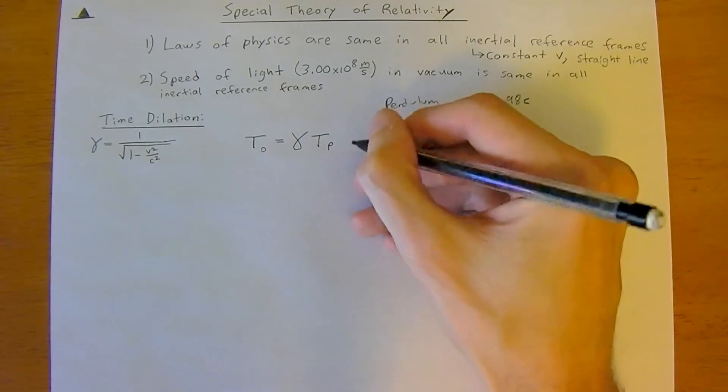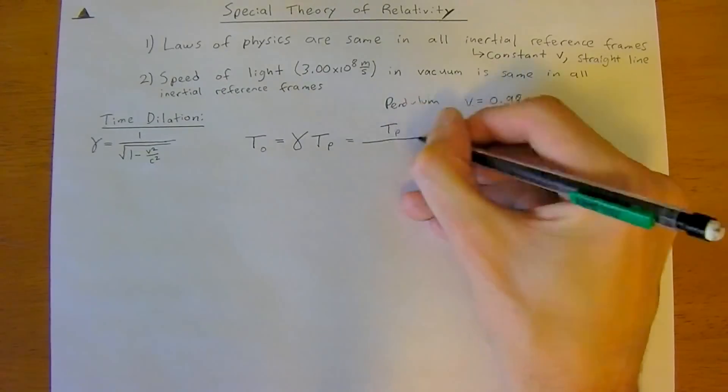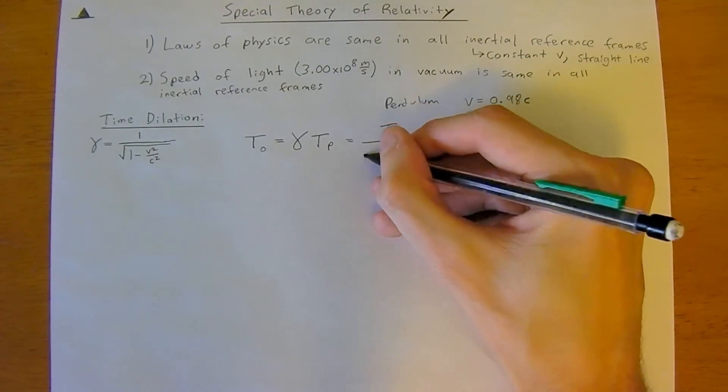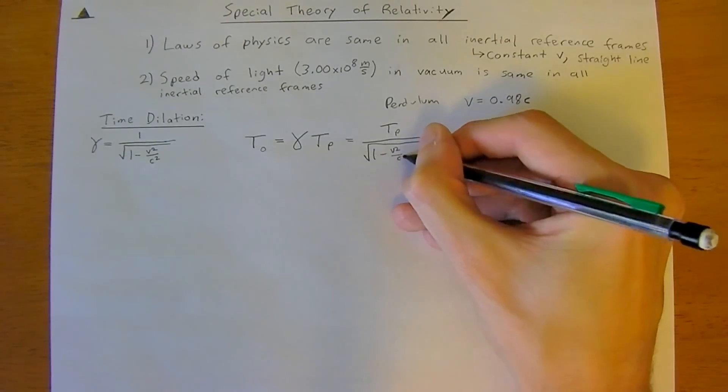And so, we just can write this as the proper time divided by square root of 1 minus v squared over c squared. That's another way you'll commonly see this.